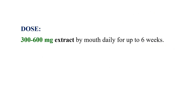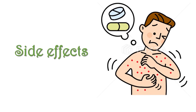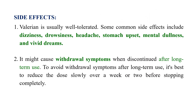The dosage: valerian extract can be used for its sedative or anxiolytic effect at a dose of 300 to 600 milligrams for up to six weeks. Side effects: valerian is usually well tolerated, but common side effects may include dizziness, drowsiness, headache, stomach upset, mental dullness, and vivid dreams. It may cause withdrawal symptoms when discontinued after long-term use; to avoid this, reduce the dose slowly over one to two weeks before stopping completely.